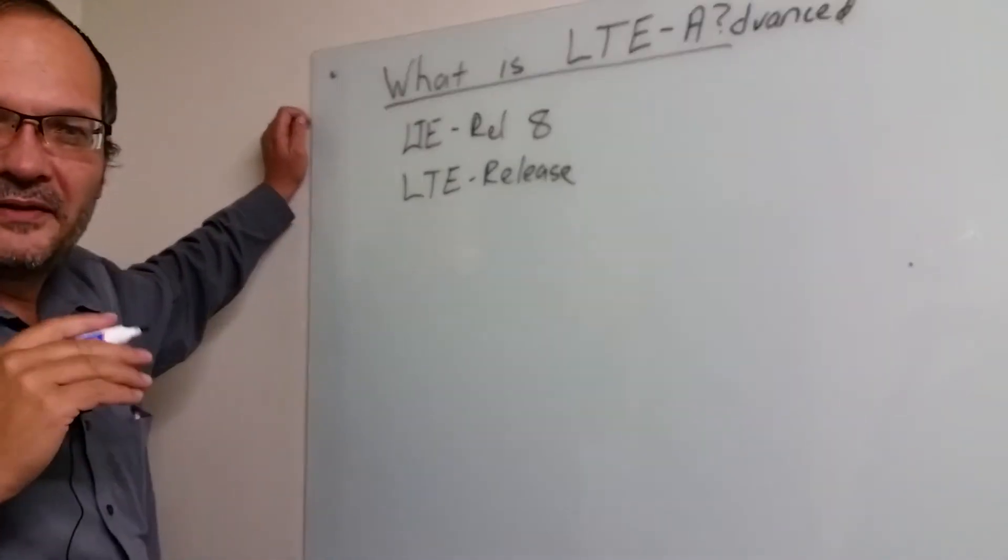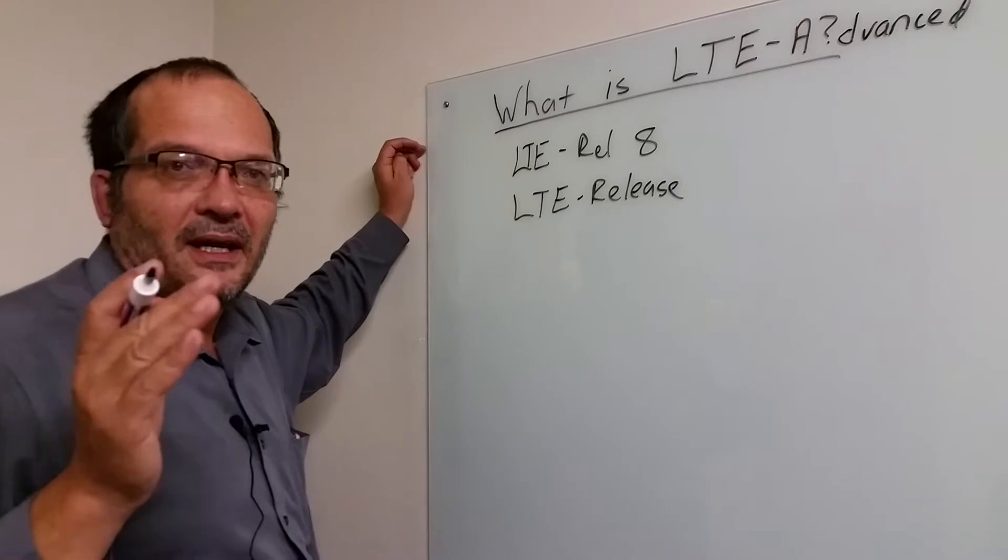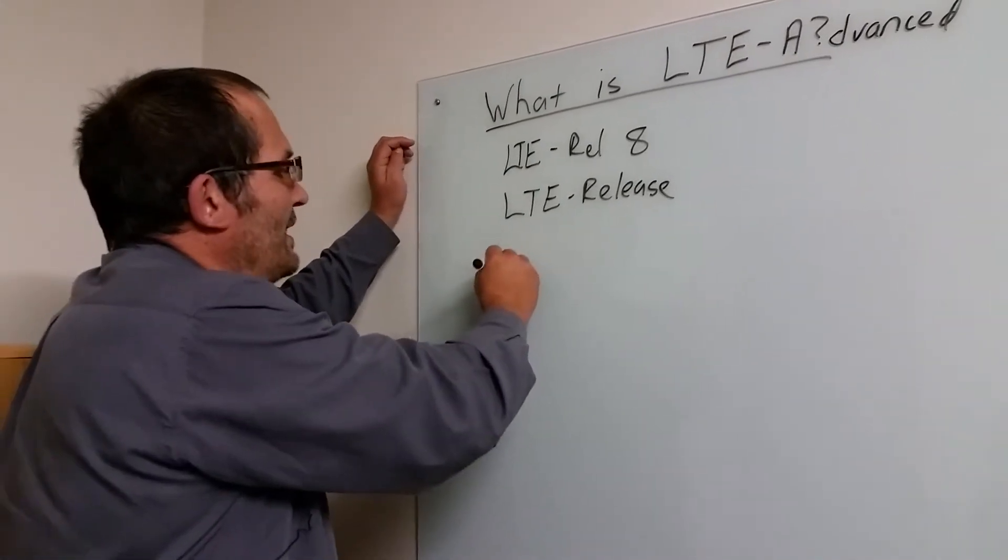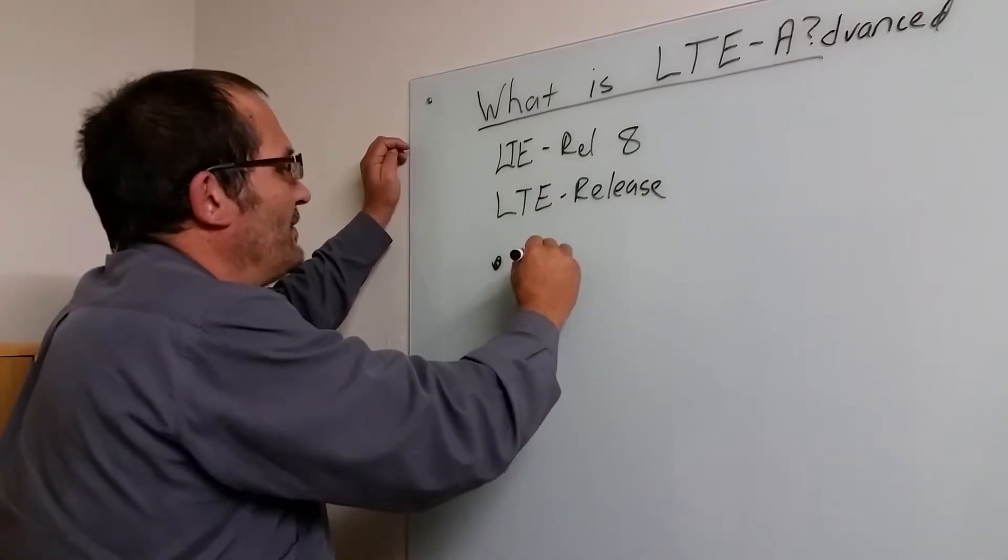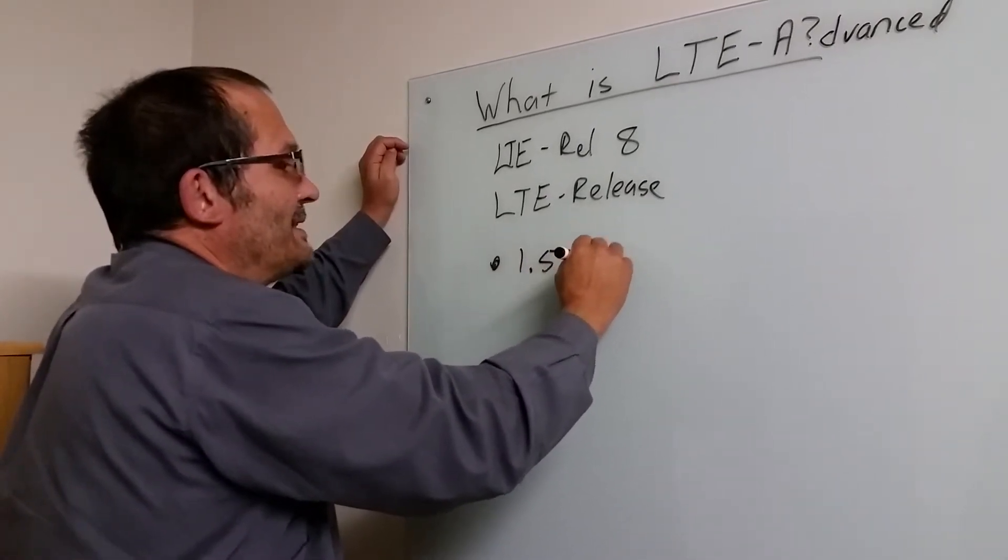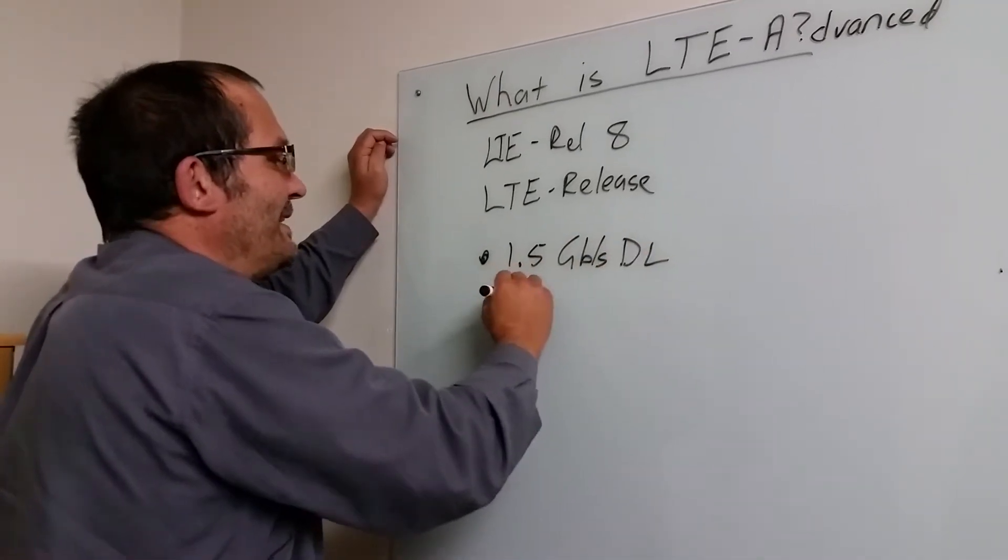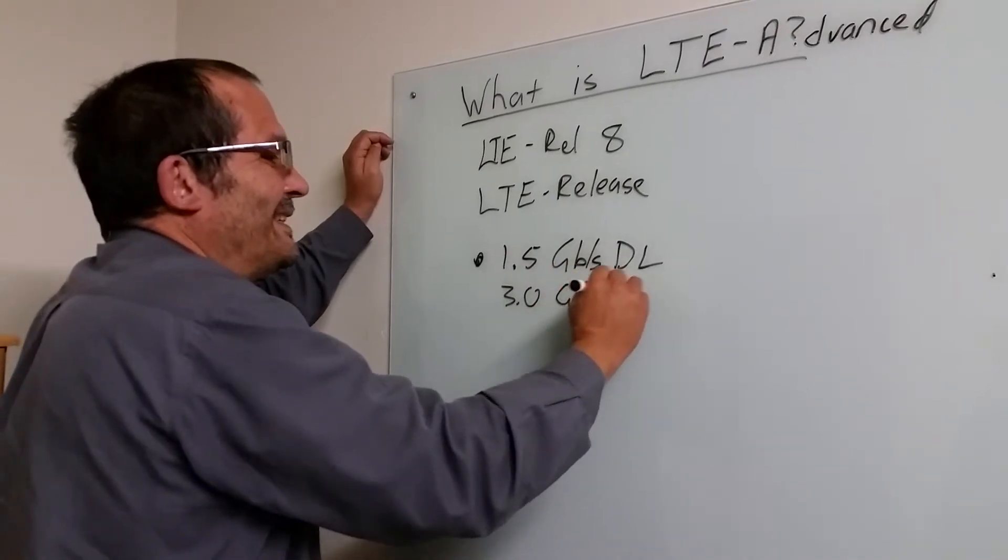It's got a huge amount of technical improvements in the sense that it can use much larger bandwidth. But the ones I want to focus on are most probably what's important for users. By claiming LTE Advanced, it will go up to 1.5 gigabits per second downlink and 3 gigabits per second uplink.